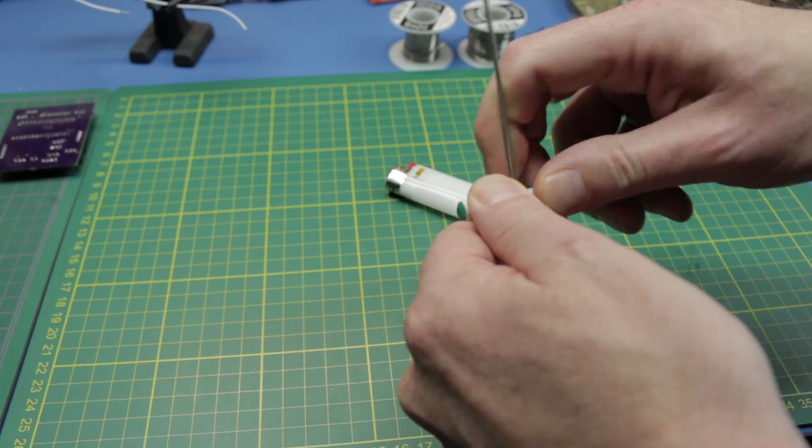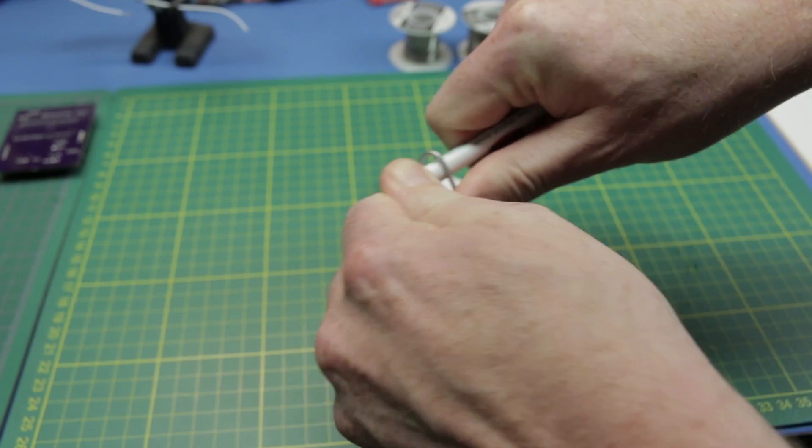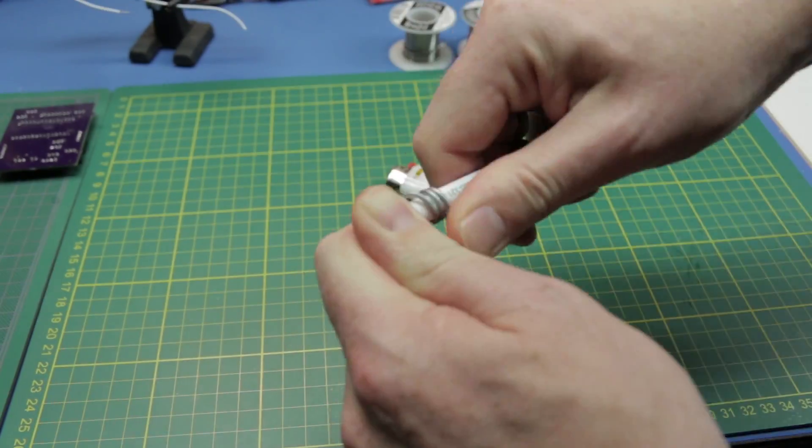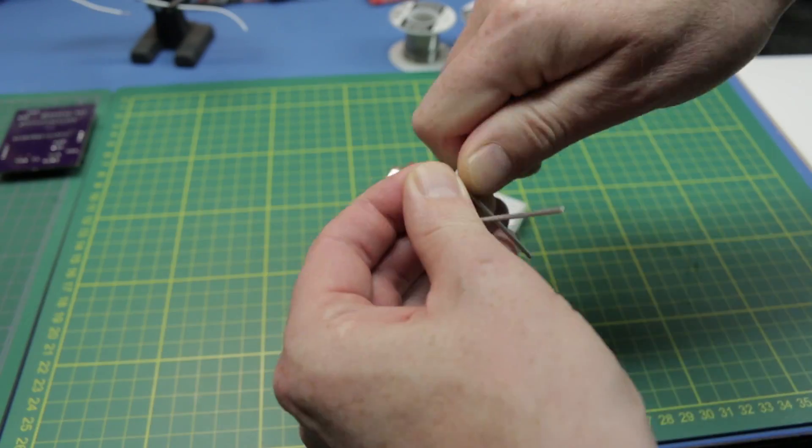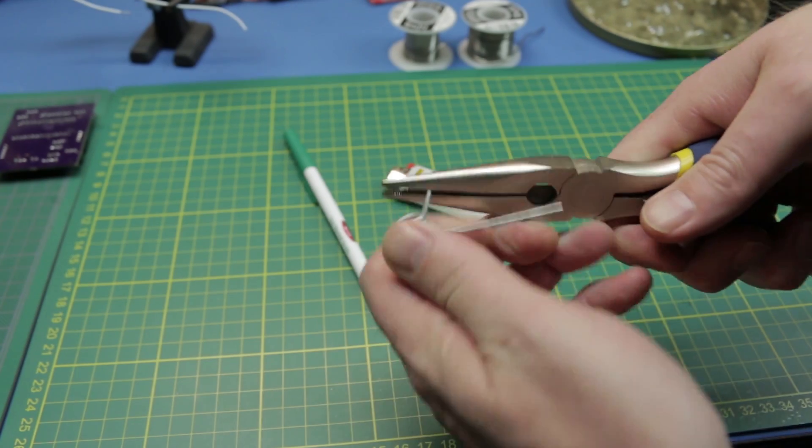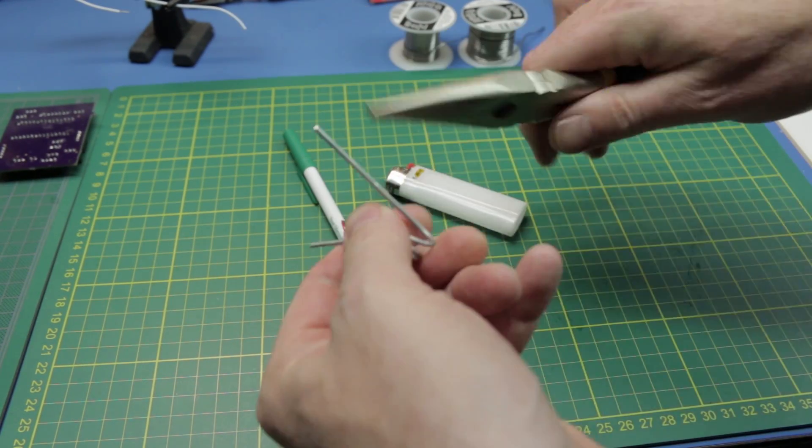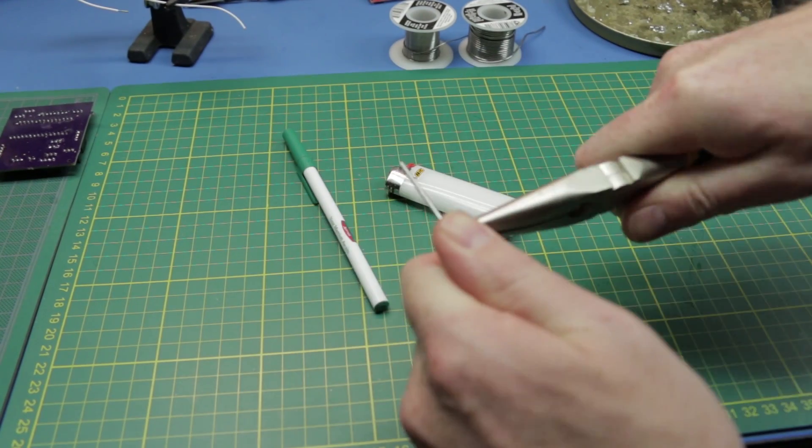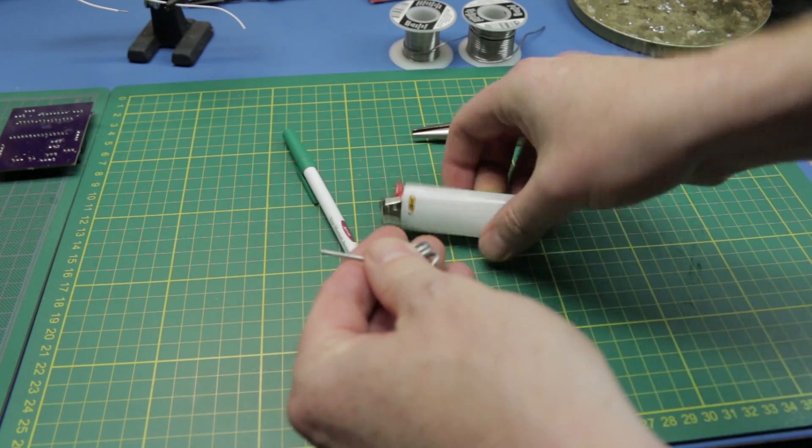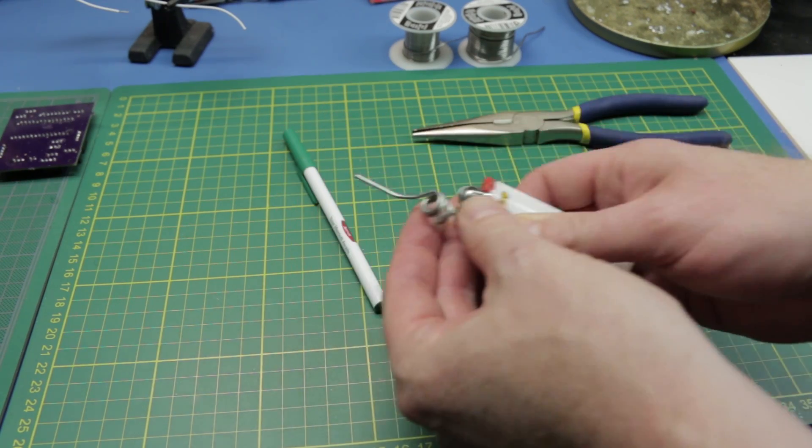What you do is you basically just wrap the wire around. In this case I'm going to use a pen. Take your wire, bend it up, take the other end, bend it down, and that in a nutshell can be used as our soldering iron.